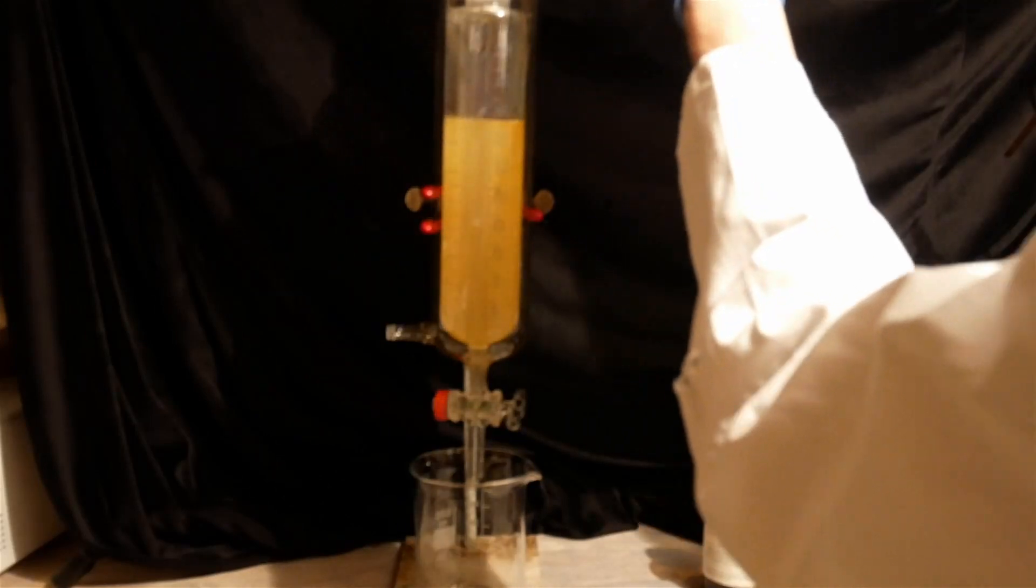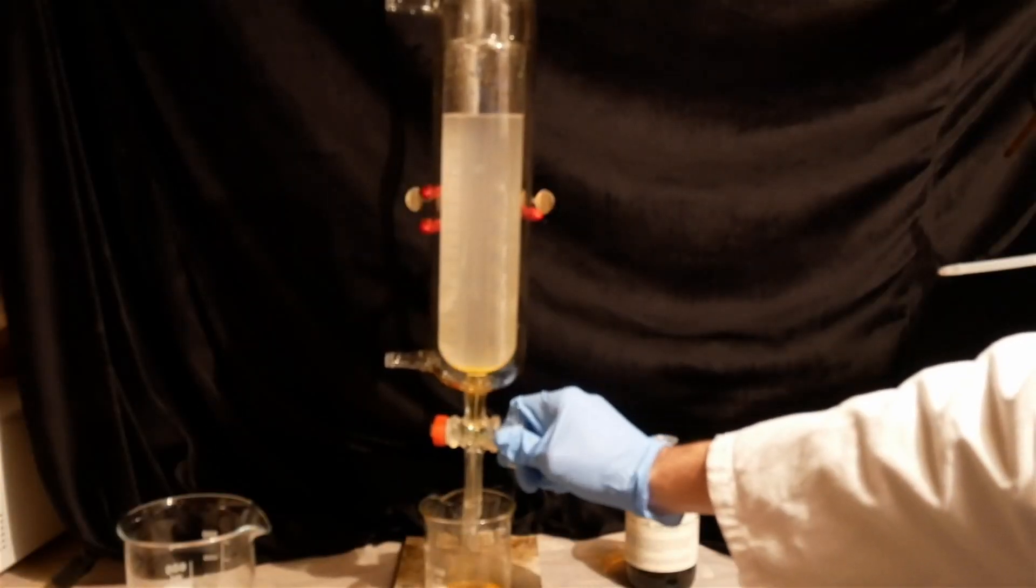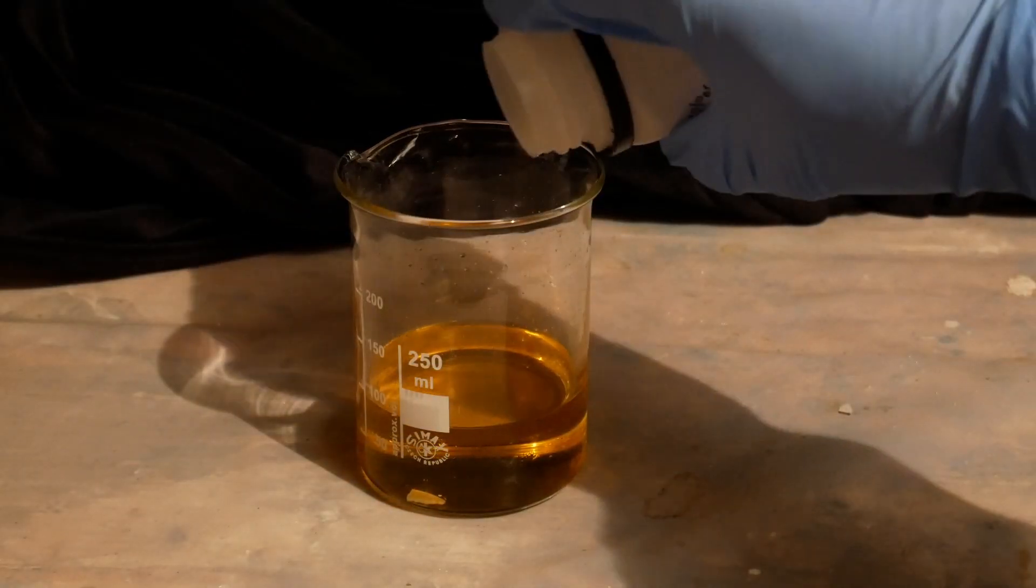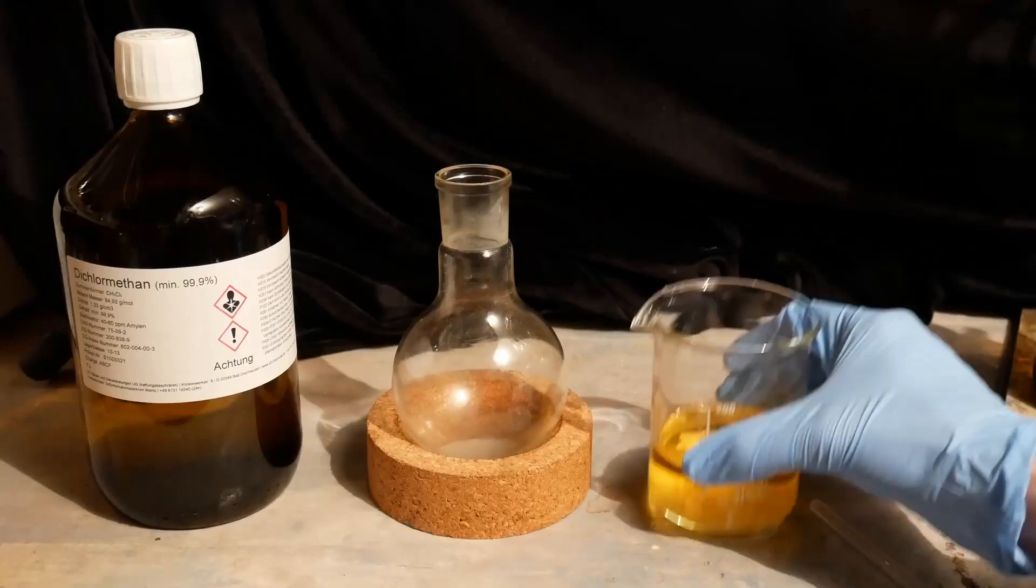The mixture is now moved to a separatory funnel and extracted three times with 50 milliliters of dichloromethane. All of the combined organic phases are then dried over potassium hydroxide and the dried organic phase is transferred to a round bottom flask.